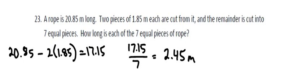So, seven ropes of length 2.45 meters plus two lengths of 1.85 meters should give you a total of 20.85 meters.